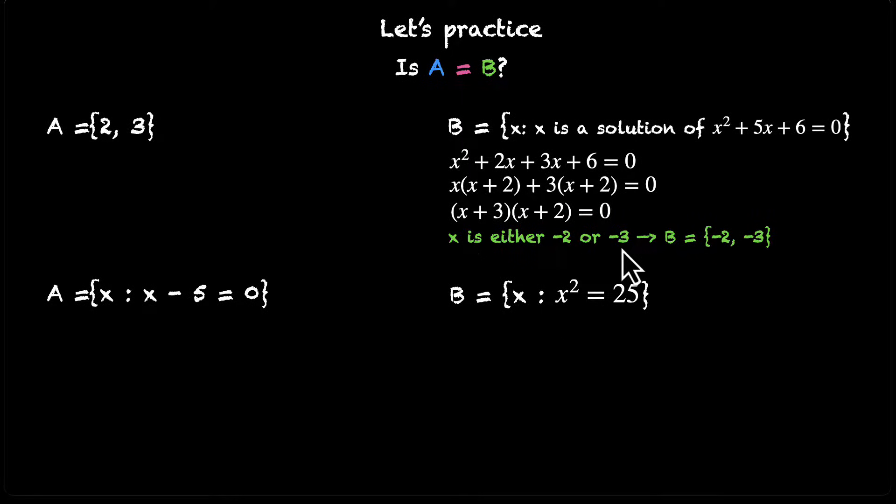And now you can take X + 2 common. You have (X + 3) times (X + 2), which gives us -3 and -2 as its roots. So X can either be -2 or -3, which means the set B is {-2, -3}. And the set A is {2, 3}. So are these two equal? Unfortunately, they are not equal.